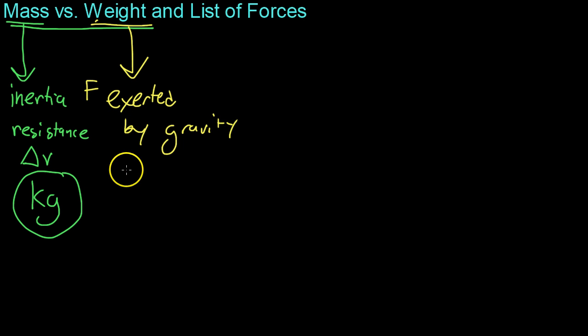And because force equals mass times acceleration, your weight, which is a force, is your mass times the gravitational acceleration of the Earth, which we normally represent as g. And this will always point towards the center of the Earth, regardless of whether you're flying through the air, you're on a slope, etc. It always points towards the center of the Earth.